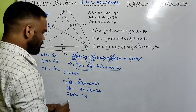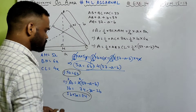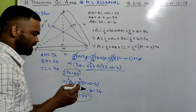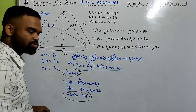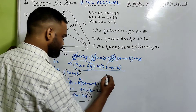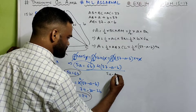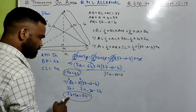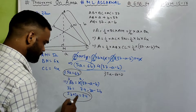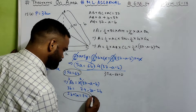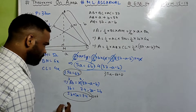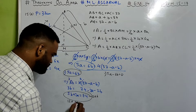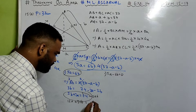Now I need to solve these simultaneously using elimination. Multiplying the first equation by 5: 25a minus 30b equals 0. Multiplying the second equation by 6: 12a plus 30b equals 444.